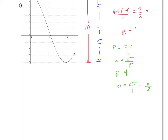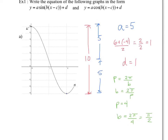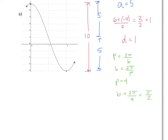We now have A, B, and D, so the only value left is C. Let's start with the cosine graph because it's usually easier — all you have to do is find a maximum for the cosine graph and you know exactly where it begins. In our case, the maximum is on the y-axis, so we haven't translated the graph left or right. For the cosine graph, C equals 0.